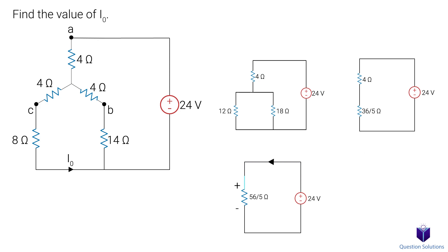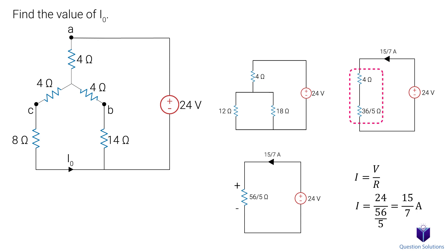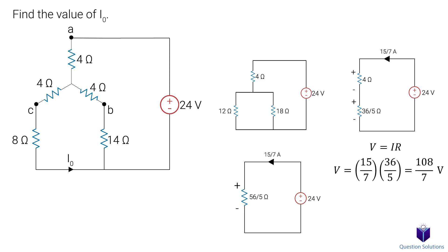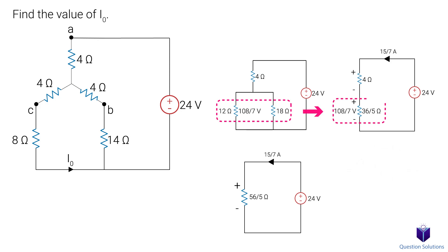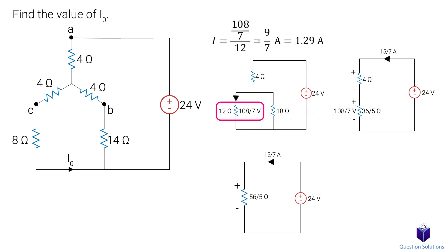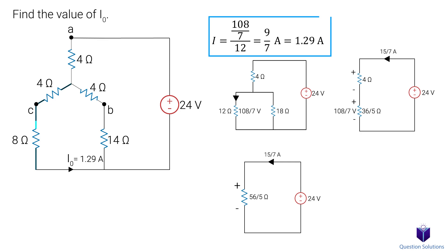The current will flow like this, so our positives and negatives on the resistor will be here. Now we can figure out the current in the circuit using Ohm's law. This current we found is the same for both of these resistors since we added them in series. Using that, we can figure out the voltage in this resistor. Now the voltage we found is the same for both of these resistors since we added these two in parallel. The last step is to figure out the current flowing through this resistor. This current value is the same current flowing through these resistors, which is also I0. So that's our answer.